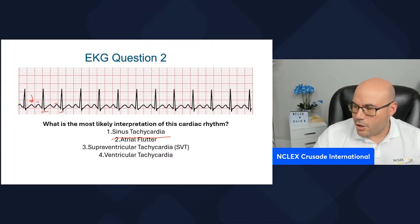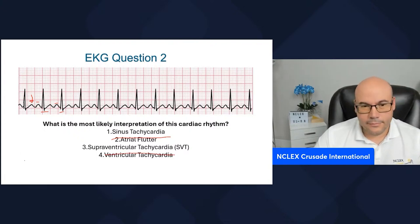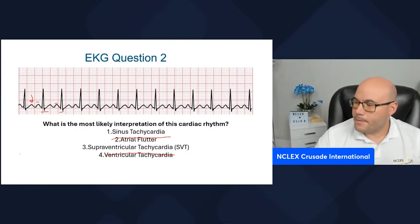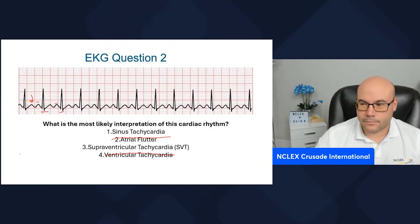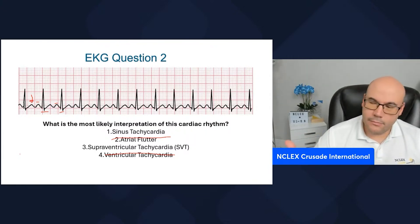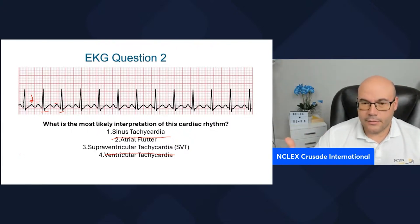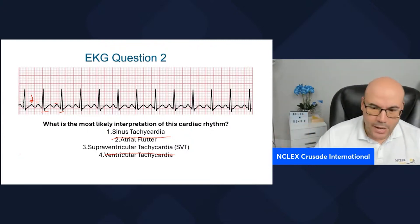This cannot be ventricular tachycardia either, because ventricular tachycardia doesn't look like that — we're going to see that another day. So we have left either sinus tachycardia or supraventricular tachycardia. We have a regular rhythm, a high heart rate of 130 beats per minute, a normal PR interval, a normal QRS, and a P for every QRS.